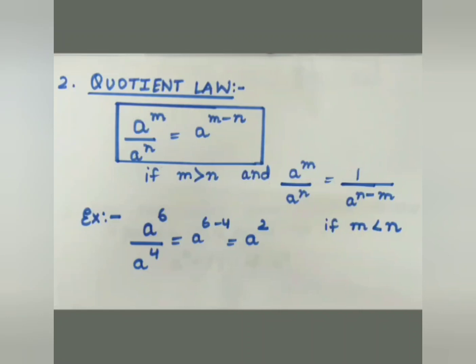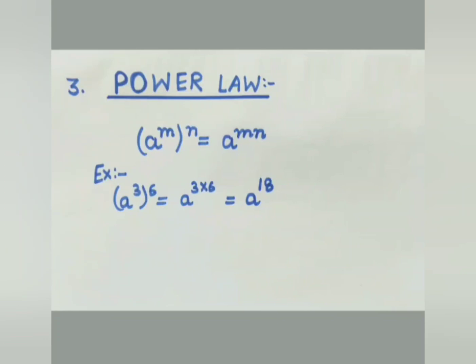The third law is the Power Law. When a number already in index form is raised to another index, the base is raised to the product of these two indices. So: bracket a to the power m, bracket close, whole to the power n — when we open the bracket, m and n get multiplied.